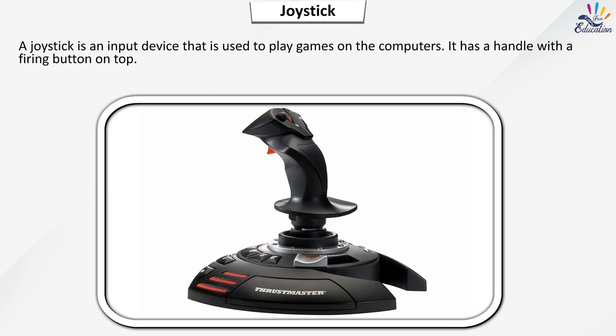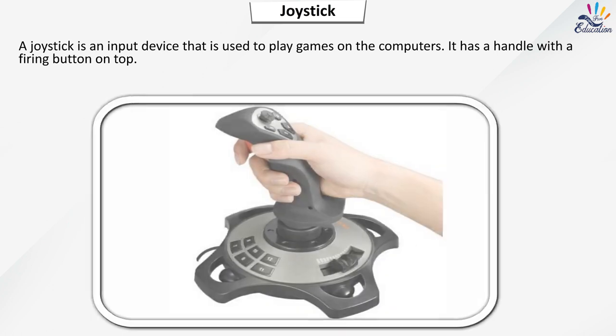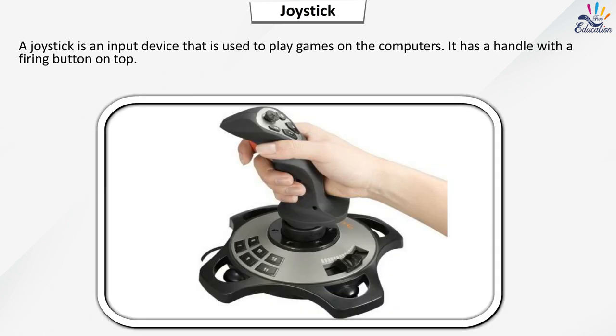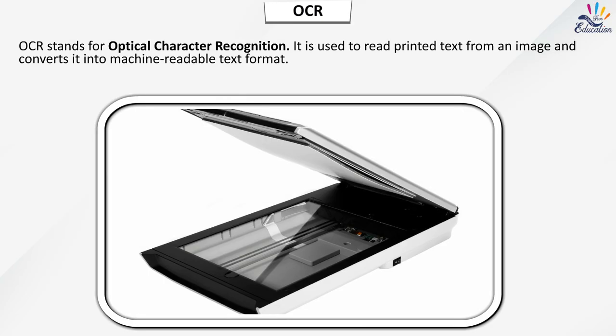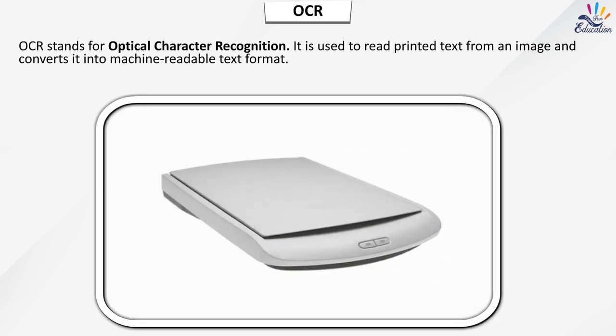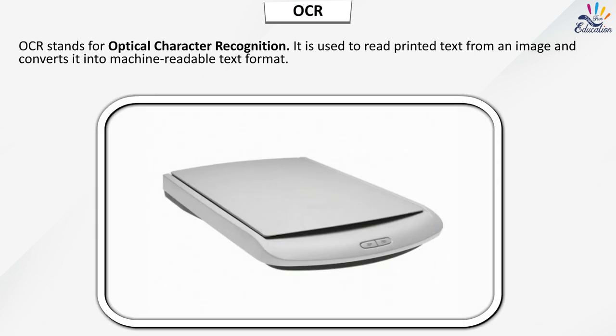A joystick is an input device that is used to play games on computers. It has a handle with a firing button on top. OCR stands for Optical Character Recognition. It is used to read printed text from an image and converts it into machine-readable text format.